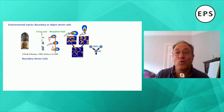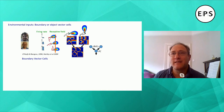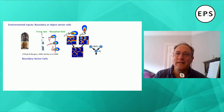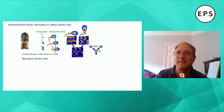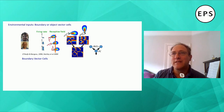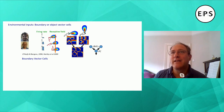We could try to understand what environmental inputs tell a place cell when the animal is in the right place. With Tom Hartley and John O'Keefe, we showed that the firing of a place cell recorded in different shaped boxes — a square, a diamond, and a circular box — is consistent with the place cell getting inputs from cells that detect the boundaries of the box.